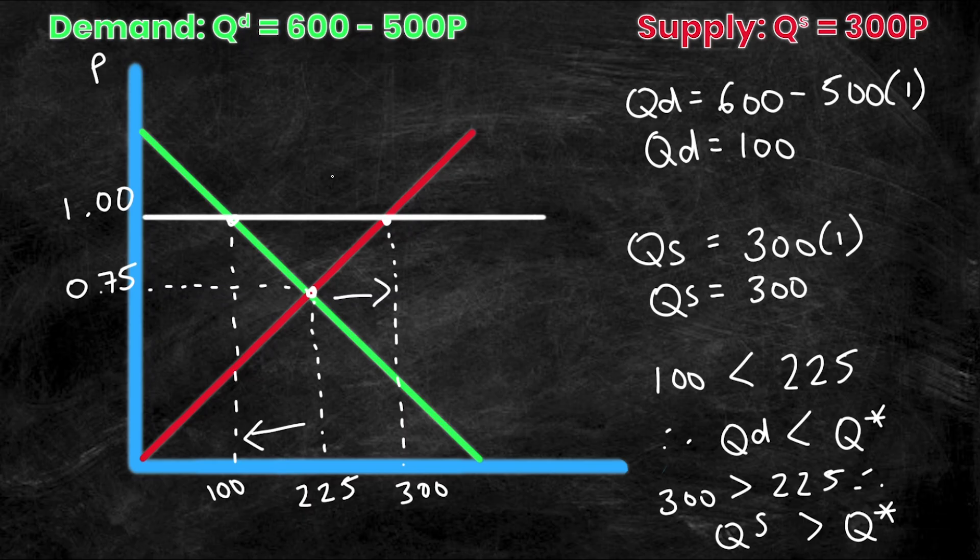So in this case, demand is really low, it's at 100. And supply is really high, it's at 300. So we have way more products being supplied in the market than there is a demand for. And we would call this a surplus, meaning that there's more supply in the market than demand. And you might be wondering, well, how much actually gets traded in the market then?